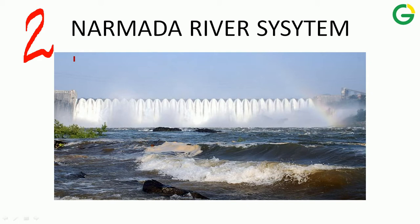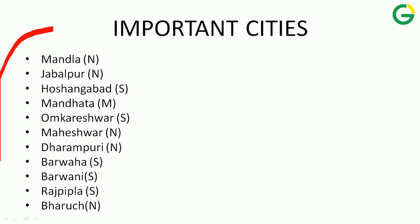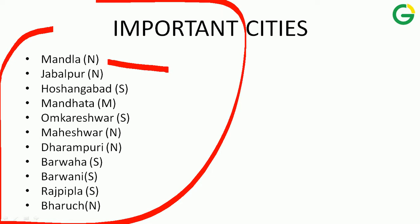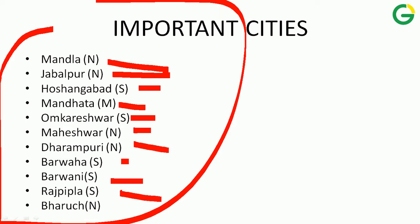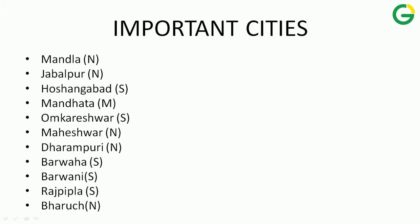In this video, we are going to start with important cities on the bank of river Narmada. These cities include Mandla, Jabalpur, Hosangabad, Mandhata, Omkareswar, Maheshwar, Dharampuri, Barwaha, Barwani, Rajpipla and Bharuch. It's hard to remember these cities like this, so a map makes understanding of geographical locations very easy. Let's tune to the map.